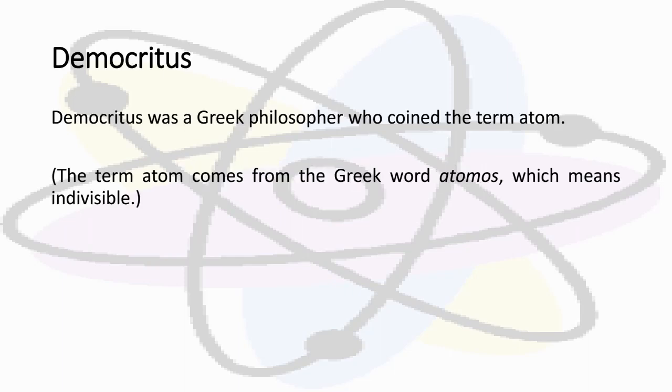These notes are on the history of the atom. Let's talk about Democritus. Democritus was a Greek philosopher who coined the term atom. That means he was the one who came up with the term atom. The term atom comes from the Greek word atomos, which means indivisible.